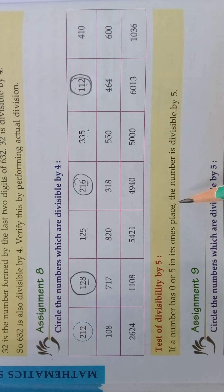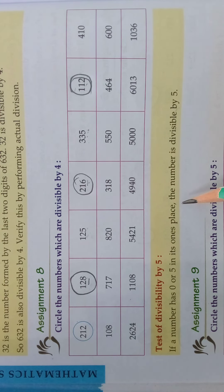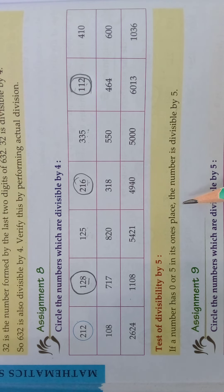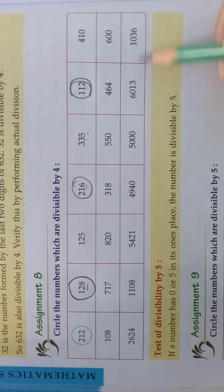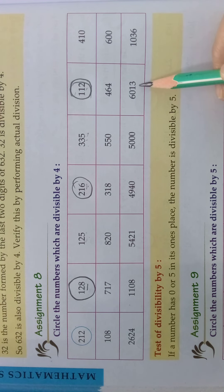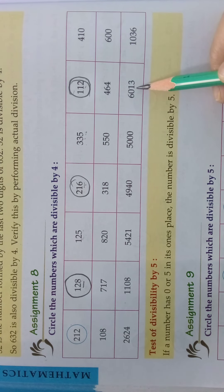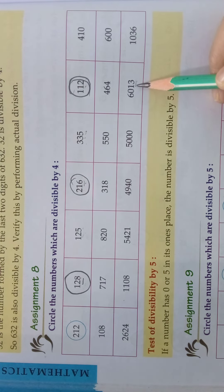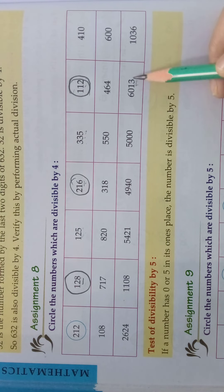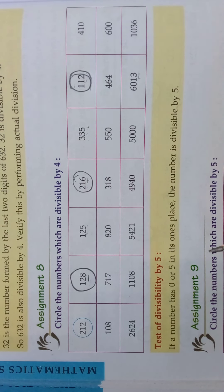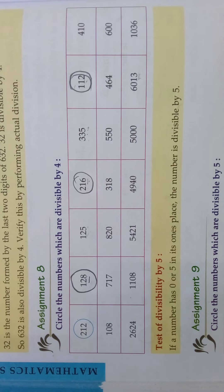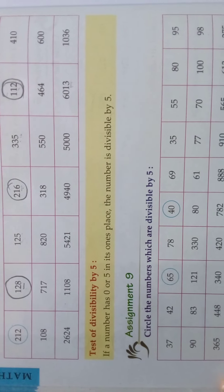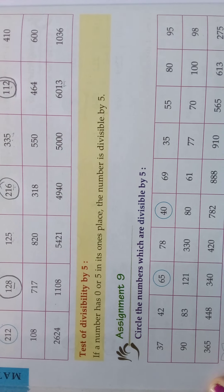So this is the way to find whether the given number is divisible by 4 or not. Now take the number 6013. Whatever the big number, even though it is a big number, we should see only the last 2 digits and check whether it is divisible by 4. Is 13 in the 4 table? No. So we can't divide this number by 4. This is how to do the divisibility test by 4.